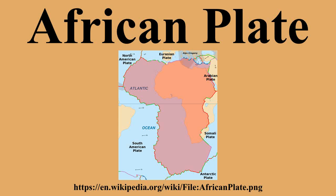The western edge of the African Plate is a divergent boundary with the North American Plate to the north and the South American Plate to the south, which forms the central and southern part of the Mid-Atlantic Ridge. The African Plate is bounded on the northeast by the Arabian Plate.